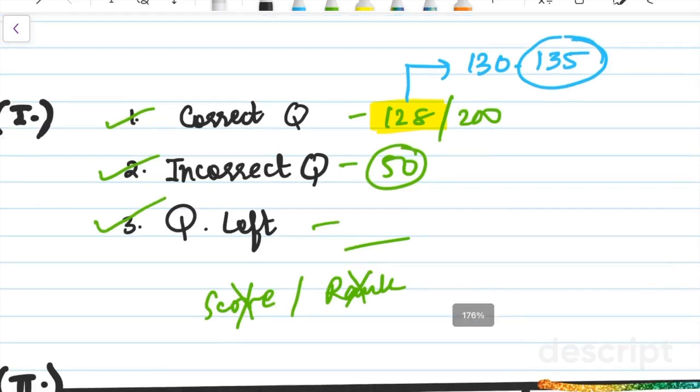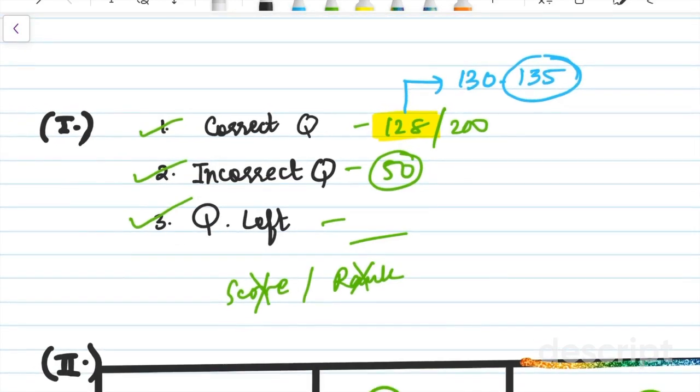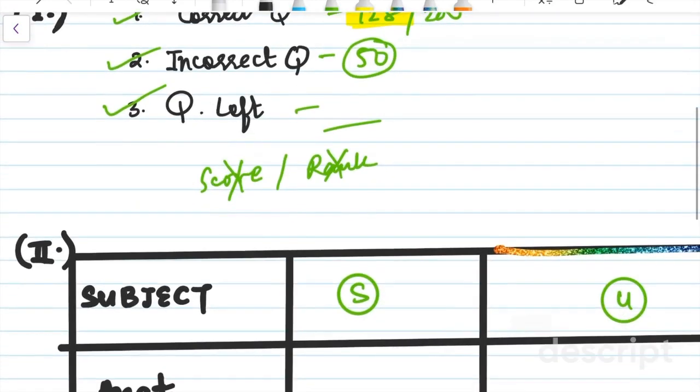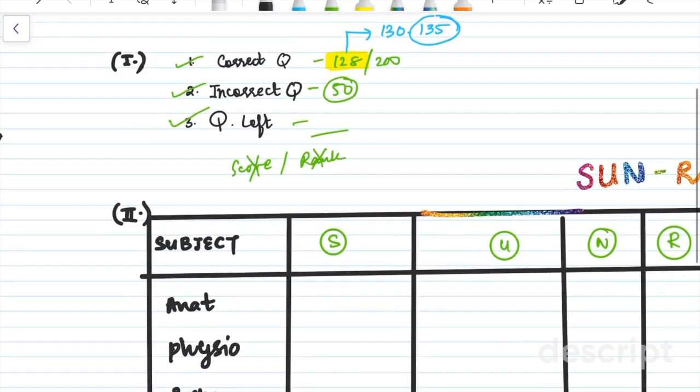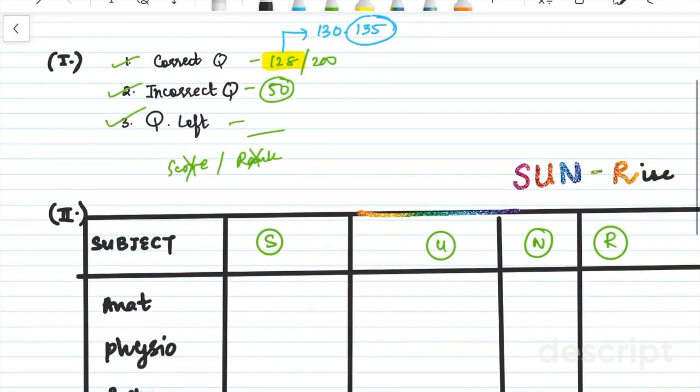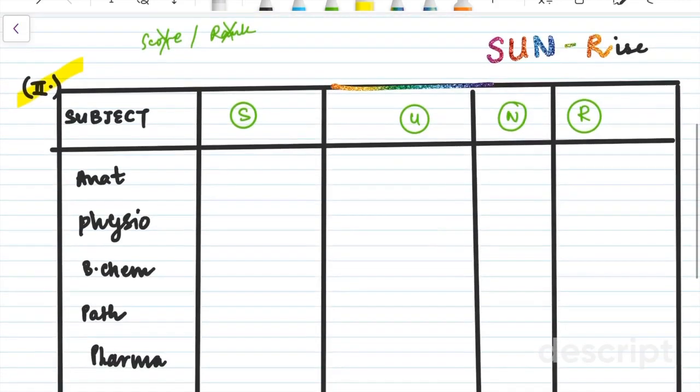The second part, which is the most important part of reviewing a GT, is where you exactly figure out where you're going wrong. This brings me to the second section. Firstly, where you write all the subjects. For example, I usually followed my sequence of the professional exams and as the subjects came by.